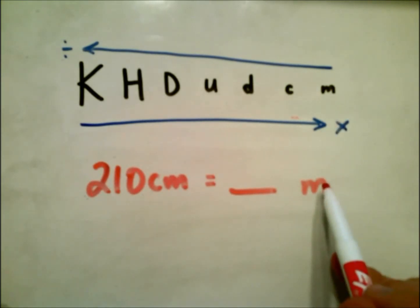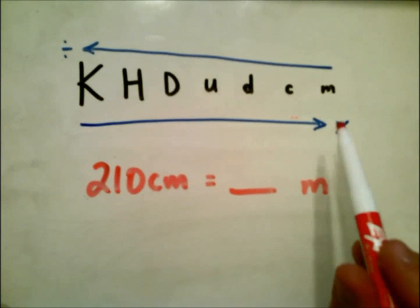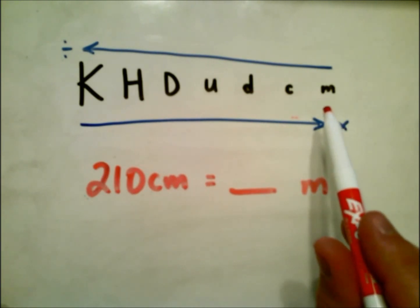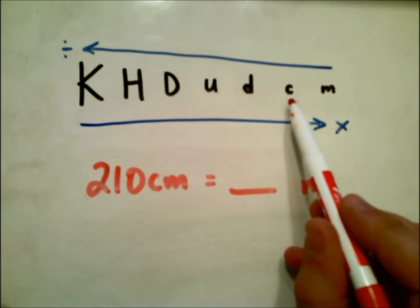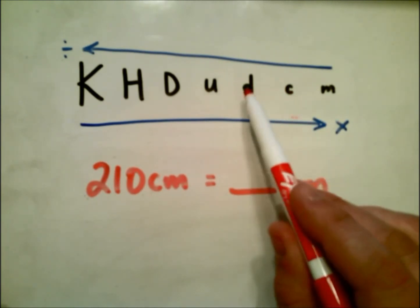We have 210 centimeters equals how many meters? Once again, don't be confused. This is not the same thing. I know I write them similarly, but this is milli prefix. We're looking at centi to the base unit of meters. So let's count the number of hops, that is, once, twice.